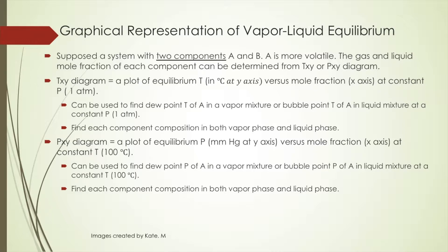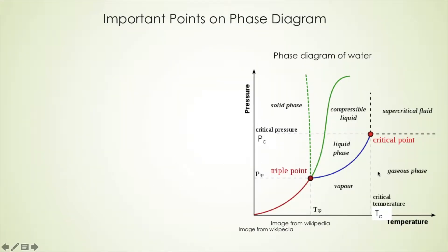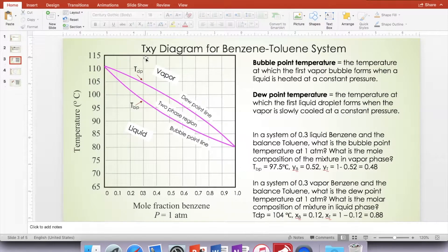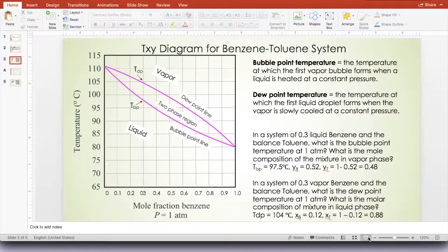The Pxy diagram can also be used to find component composition in both vapor phase and liquid phase. Remember at the beginning of the chapter we talked about the phase diagram of water, where the vapor and liquid water share an equilibrium line. So when you increase pressure at constant temperature, the vapor will turn into liquid phase. We're now looking at this vapor-liquid equilibrium line at a more detailed level — that's where we get the Txy or Pxy diagram.